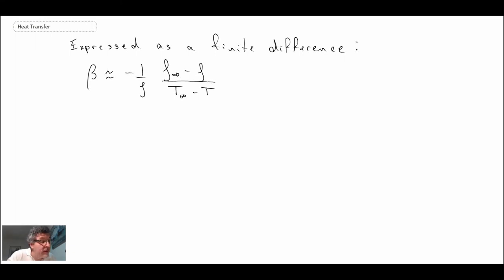So we have here an expression for the difference in density, now expressed in terms of the density, the volumetric expansion coefficient, and the difference in temperature. This is referred to as the Bousinesque approximation.